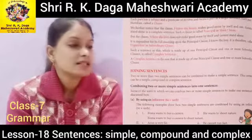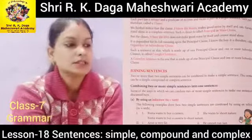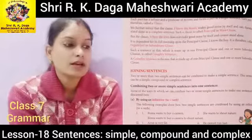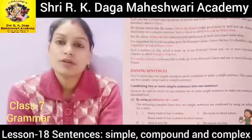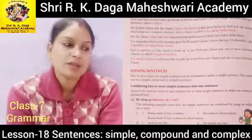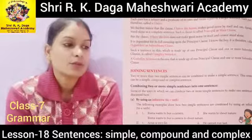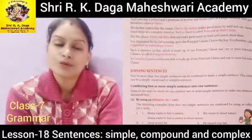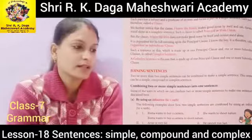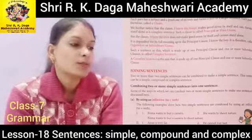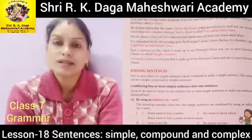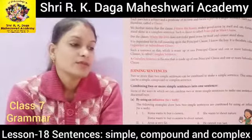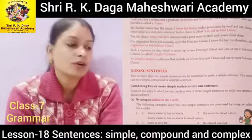For example: 'Rama wants to buy a camera. She wants to shoot nature.' These two sentences are combined using an infinitive verb: 'Rama wants to buy a camera to shoot nature.' Another example: 'Arun is very fat. He cannot run fast.'